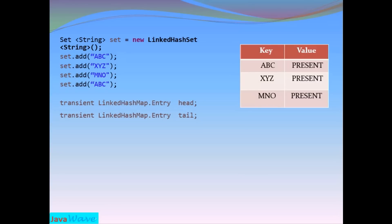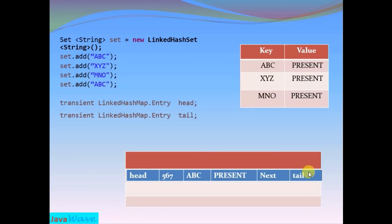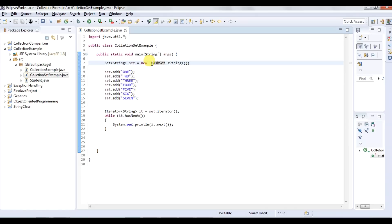Inside the bucket, assume we get index 1 for 'abc' with hash code 567. It will store the hash code, the actual key value, the actual map value, and the next node's memory address. The head and tail values are also stored, which track the node added before and the node added after this one. This is how LinkedHashSet maintains insertion order.